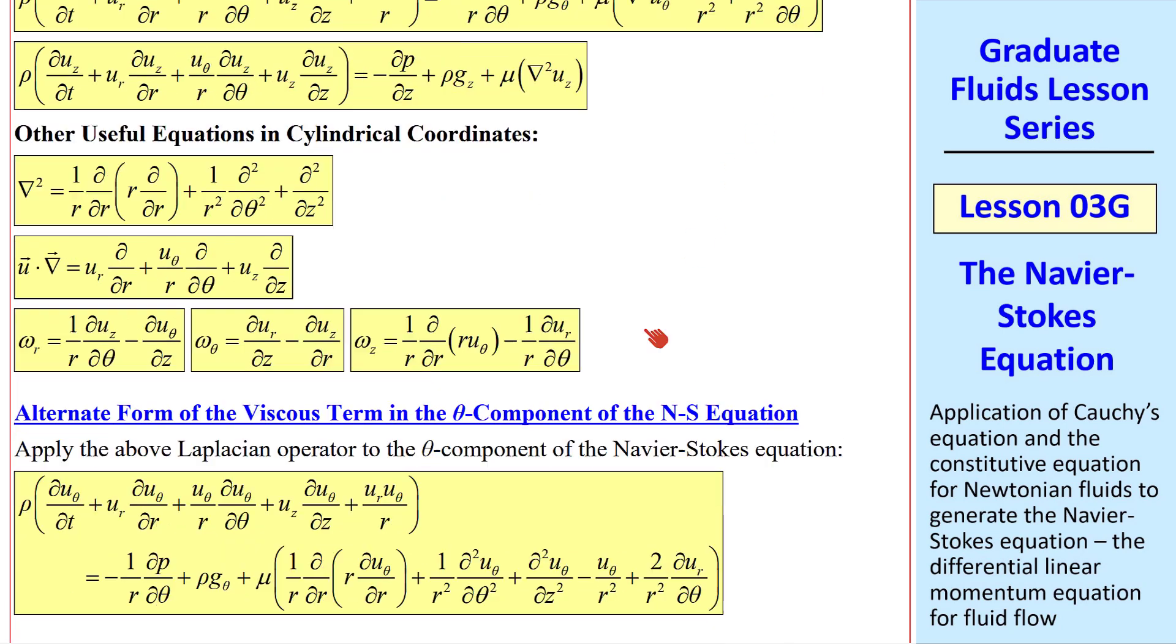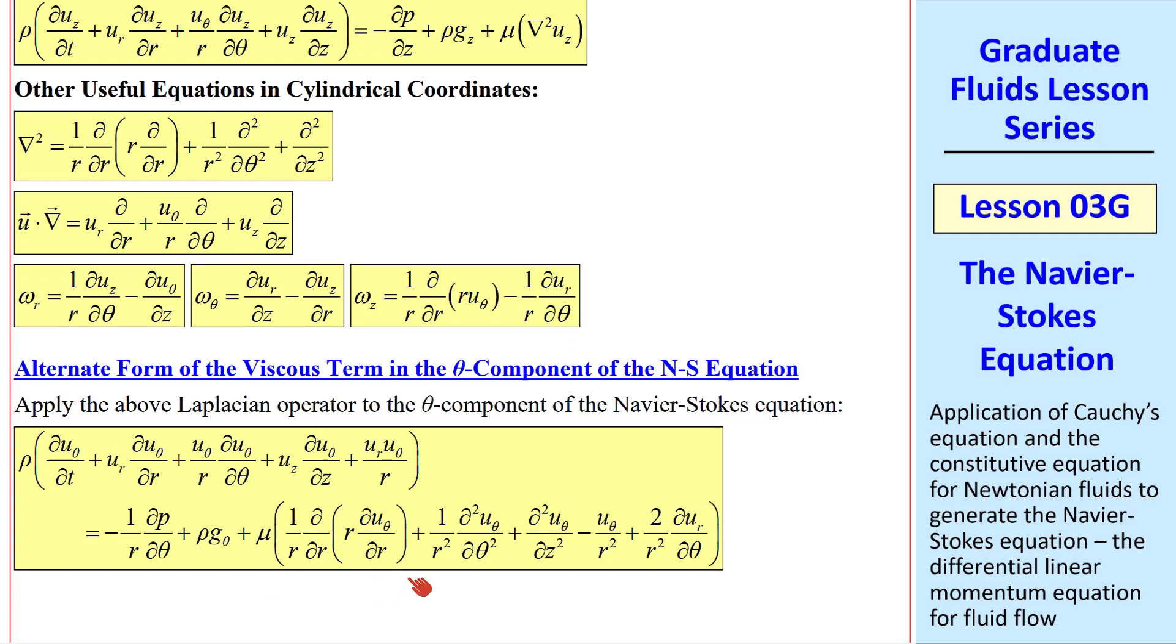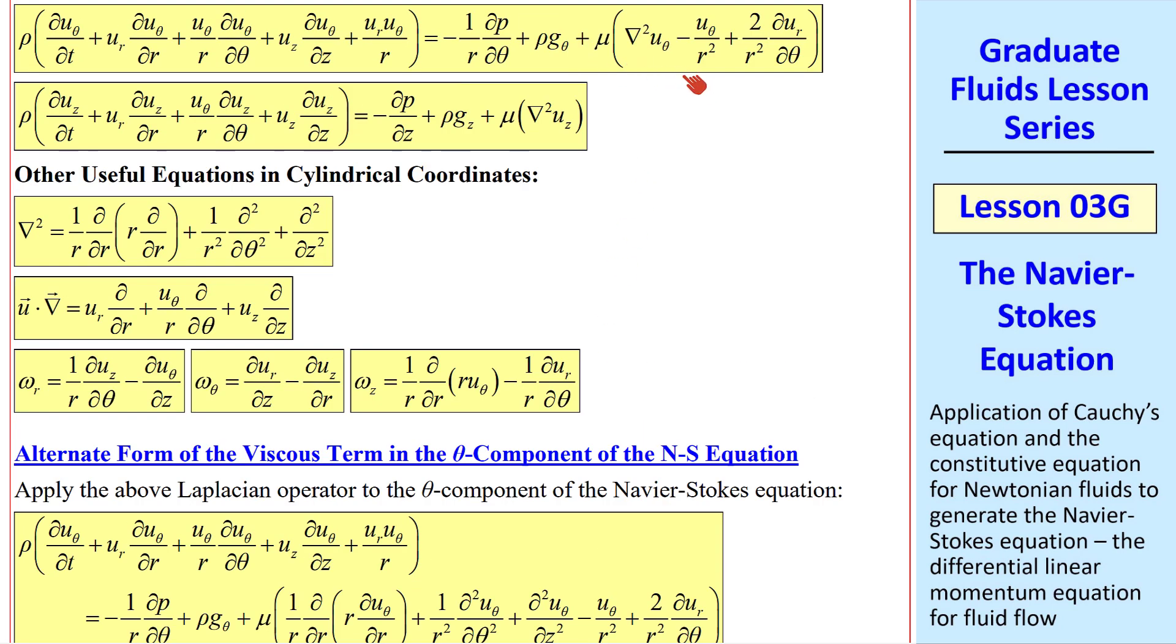I also note that if you plug this Laplacian into the theta component of the Navier-Stokes equation, you can rewrite the viscous terms as this string of terms. This is just an alternate form of the theta component of the Navier-Stokes equation. Depending on the flow you're trying to solve for, you may want to use this form or this form. I like to say use whichever one is easier.